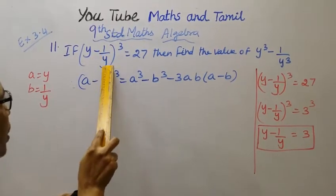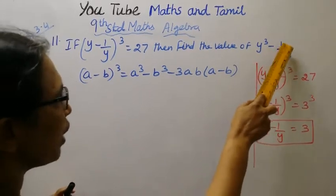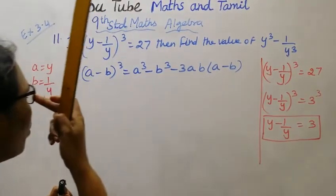If y minus 1 by y the whole cube equals 27, then find the value of y cube minus 1 by y cube.